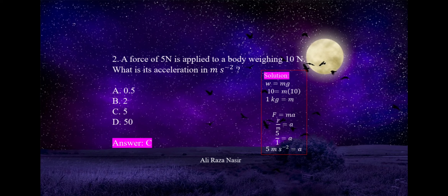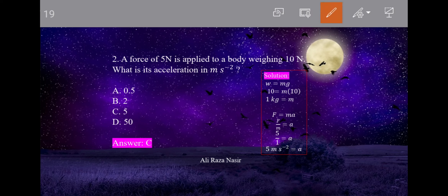Next MCQ: a force of 5 Newton is applied to a body weighing 10 Newton — what is its acceleration? First, weight is given in Newton, which means it is weight (not mass). From W = mg, mass comes out to 1 kg. Now using F = ma, so a = F/m = 5/1 = 5 meter per second square. So option C is correct.